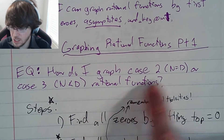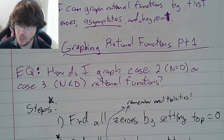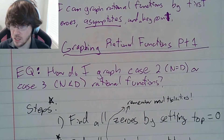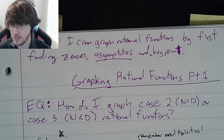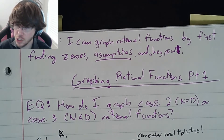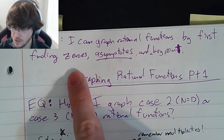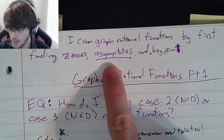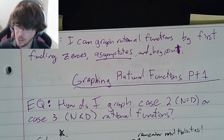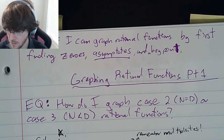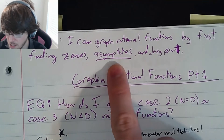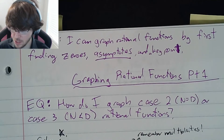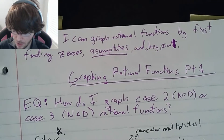Case two and case three refer to that previous lesson we did with end behavior, because that's going to come into play here. The objective is: I can graph rational functions by first finding zeros, asymptotes — that's going to be a vocab word and a key point. Let's talk about this word asymptote, spelled A-S-Y-M-P-T-O-T-E-S.